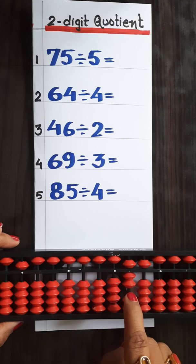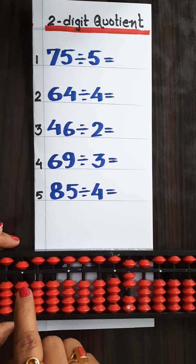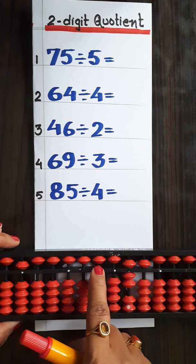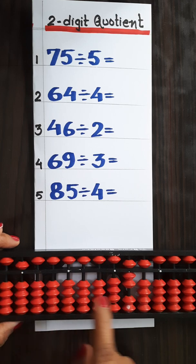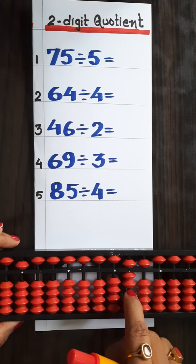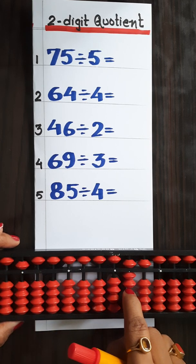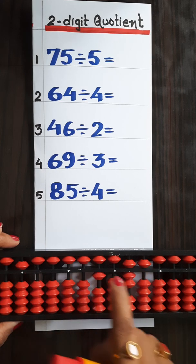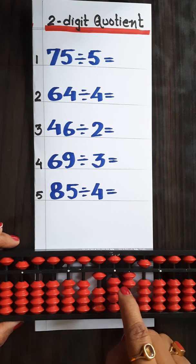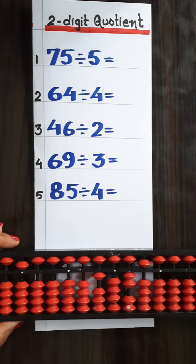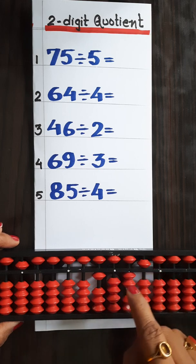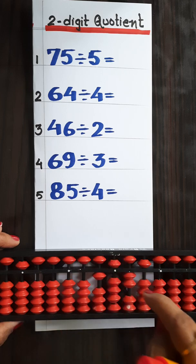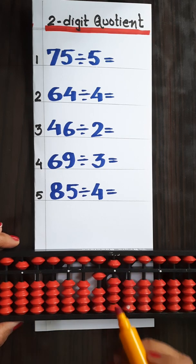After the ones rod we need to place the dividend. The first digit of the dividend is greater than the divisor, so in that case we have to place the dividend on the tens rod. Now we have to read the table of 5 for 7. Because 7 is greater, we will not take both digits. So 5 ones are 5. Now in the second step we will take the second digit, that is 5, so now we have the number 25.